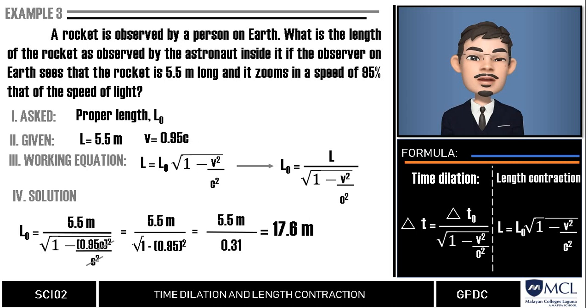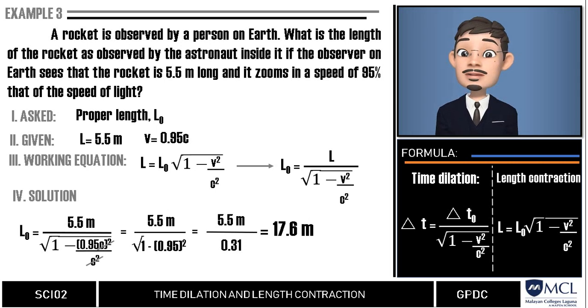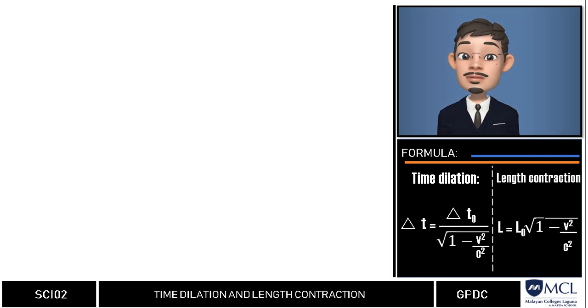This suggests that even though this rocket ship is 17.6 meters as measured by the astronaut inside it, it appears to be contracted and small for an observer seeing it in relativistic speeds. For the last example in this video,